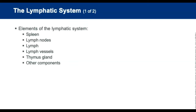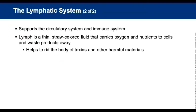The lymphatic system supports the circulatory and immune systems. Its elements include the spleen, lymph nodes, lymph, lymph vessels, and thymus gland. Lymph is a thin, straw-colored fluid that carries oxygen, nutrients, and hormones to cells and carries waste products away. Lymph vessels form a network throughout the body as an auxiliary to the circulatory system. Lymph nodes are tiny oval-shaped structures that filter lymph, helping rid the body of toxins and harmful materials.